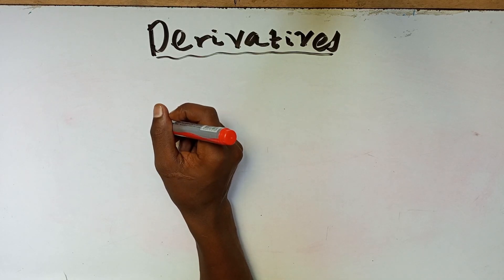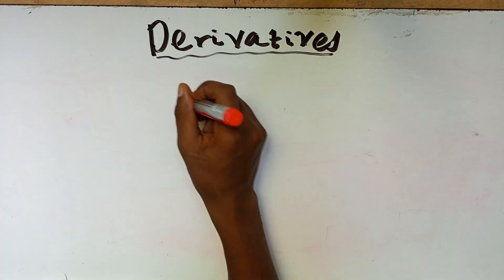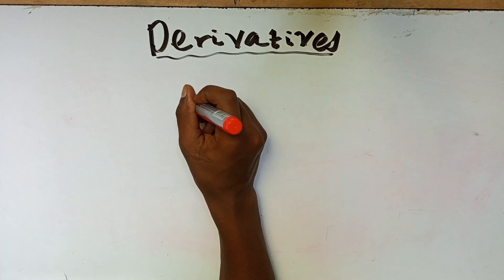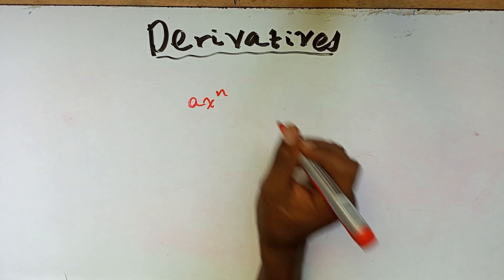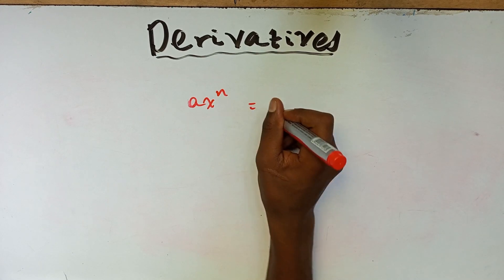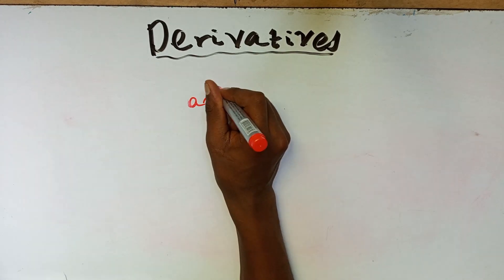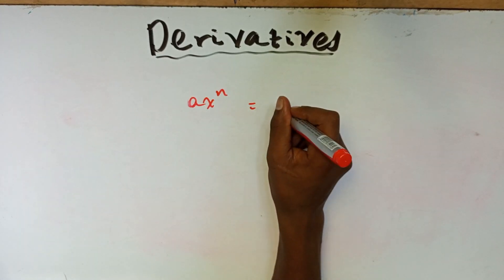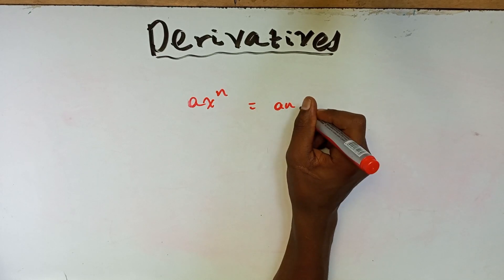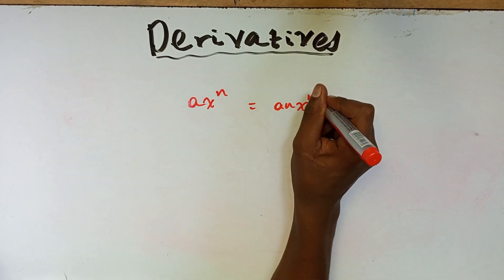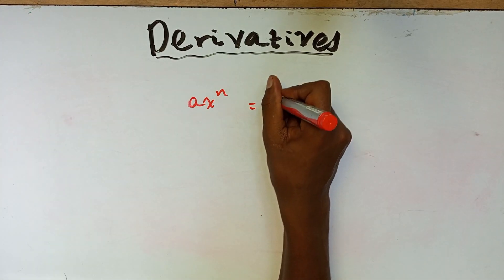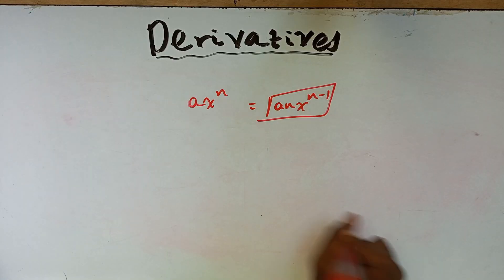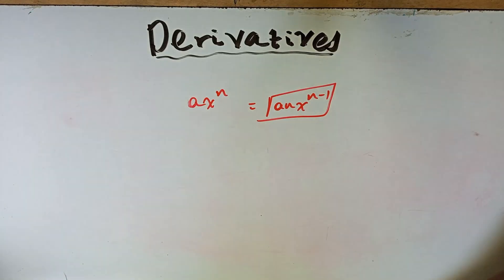In derivatives, we have to reduce the power by one. For example, if it is given ax to the power of n, we have to reduce the power of n by one, giving us n times ax to the power of n minus one. This is what we call the derivative.